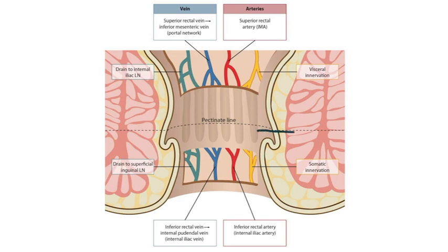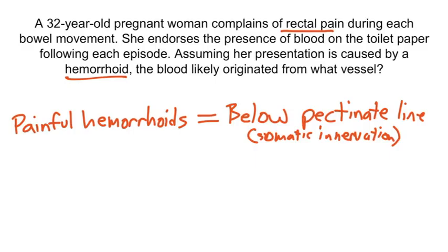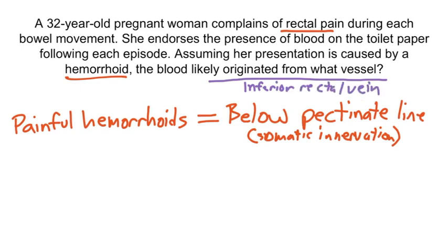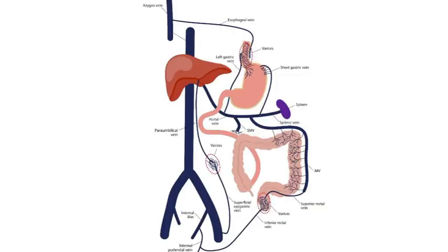Going back to the image, we see that below the line receives somatic innervation, which leads to pain. Since hemorrhoids are a venous pathology, and the hemorrhoid is below the pectinate line, we're looking at the inferior rectal vein — that's the answer. The inferior rectal vein is visible in the image and drains blood from below the pectinate line.